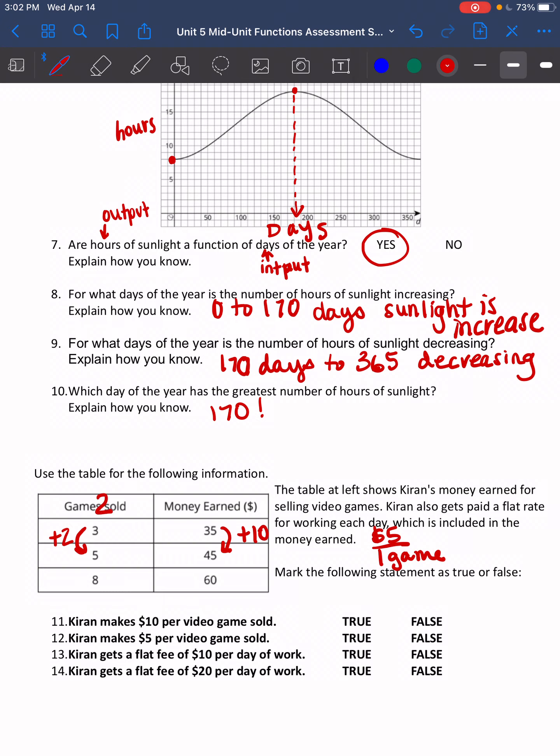So that would tell me if I earned $10 in two games, that I would earn $5 for every one game. So then let's add some values to my table. Two games, I would have to do 35 minus 5, I would get 30. One game would be 25 sold, and zero games I would get $20, or Kiran would get $20. Kiran makes $10 per video game sold. That's false. We just figured out that he makes $5 for every one game. Number 12, Kiran makes $5 per every video game sold. That's true. We just found that out by looking at our table.